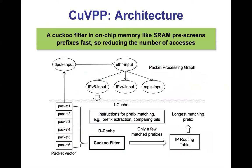Let's first take a look at the overall architecture of QVPP. This is a bird's eye view of the architecture. As you can see, not a single packet but a vector of packets are processed together going through the packet processing graph. While an instruction is in cache — namely iCache — all the packets in the vector are processed, improving cache hit rate and performance even further. Not only for the instruction but also the data: network prefixes are stored in the cuckoo filter in cache, so the search is processed fast and only a few matched prefixes need to be compared to prefixes in the routing table instead of all of the prefixes. This will reduce the memory access time significantly.